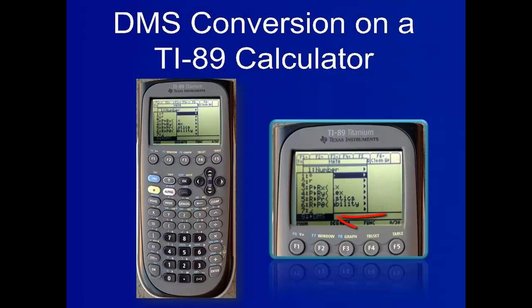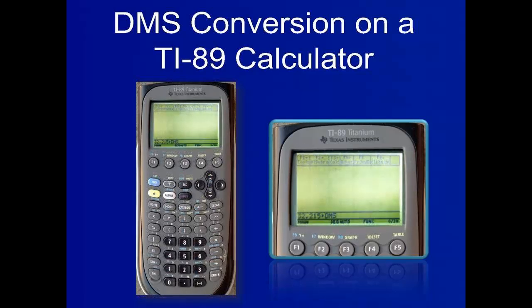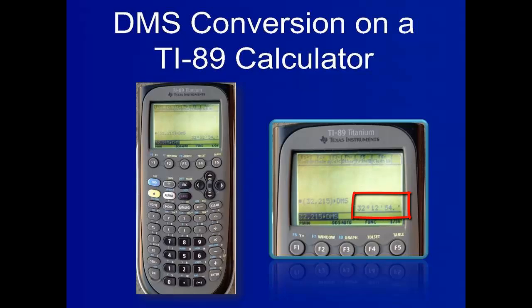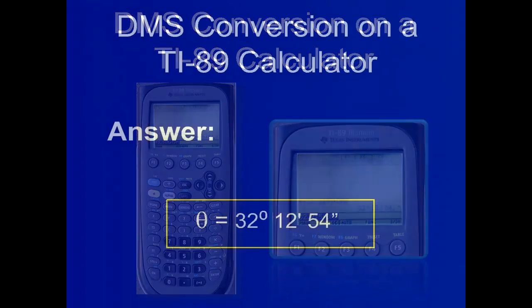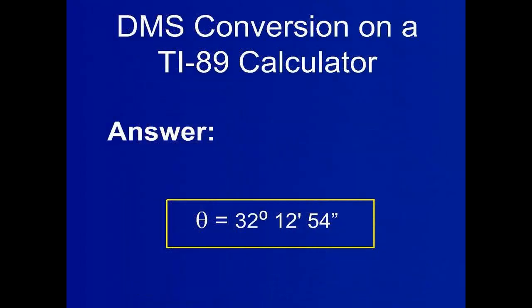Next, scroll down to the eighth option labeled DMS and press enter. Press enter again and the answer — 32 degrees, 12 minutes, and 54 seconds — will display above. Write your answer clearly at the bottom of the problem.